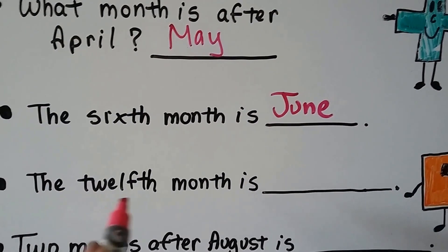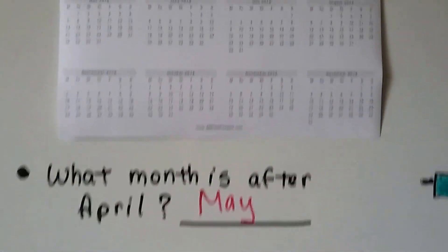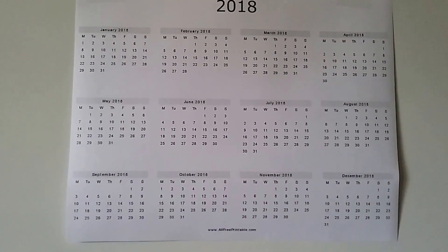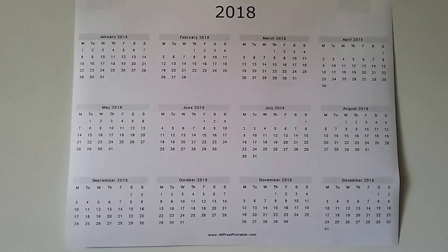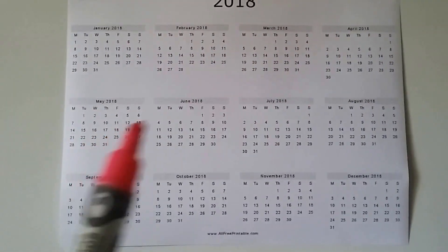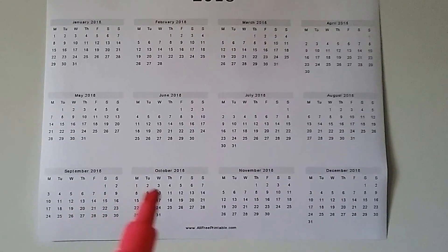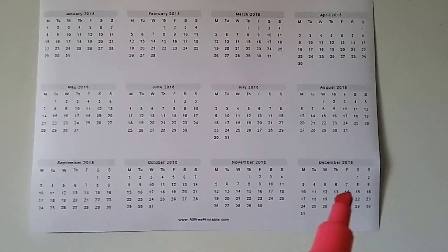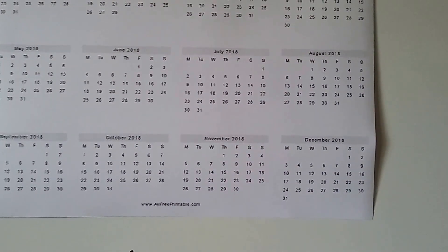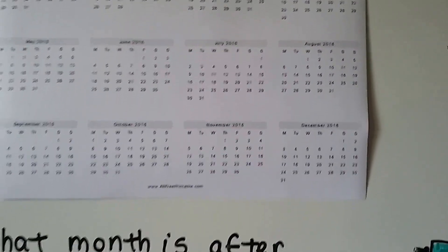The twelfth month is... you might know this right away. Let's count: one, two, three, four, five, six, seven, eight, nine, ten, eleven, twelve — it's the last one. The twelfth month is December.